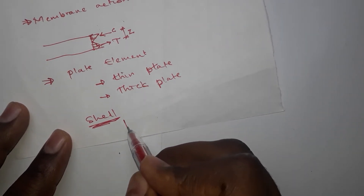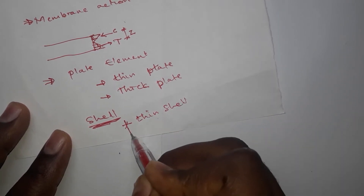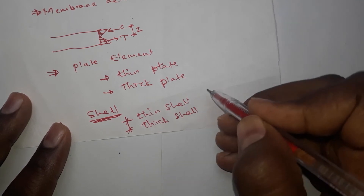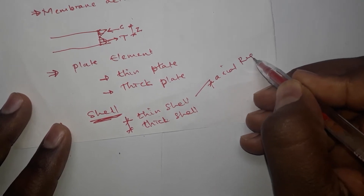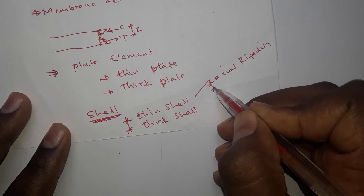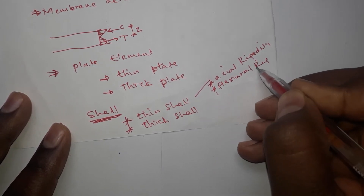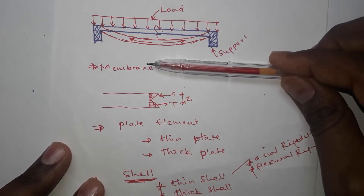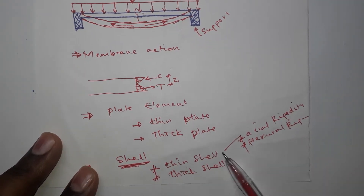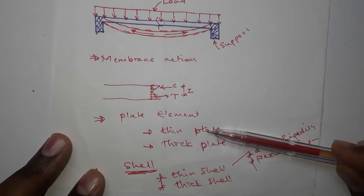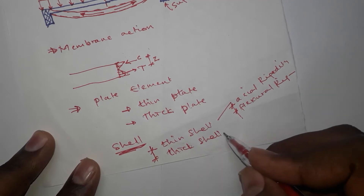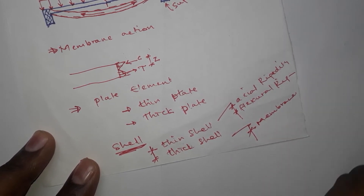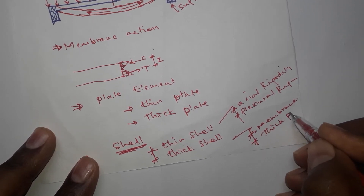Now shell elements also have two types: thin shell and thick shell. When you are using the thin shell, it will consider the axial rigidity and the flexural rigidity — both. This means shell includes both the membrane action as well as the plate action. The thin shell considers the thin plate action and the membrane action, whereas the thick shell will consider the membrane action and the thick plate concept.